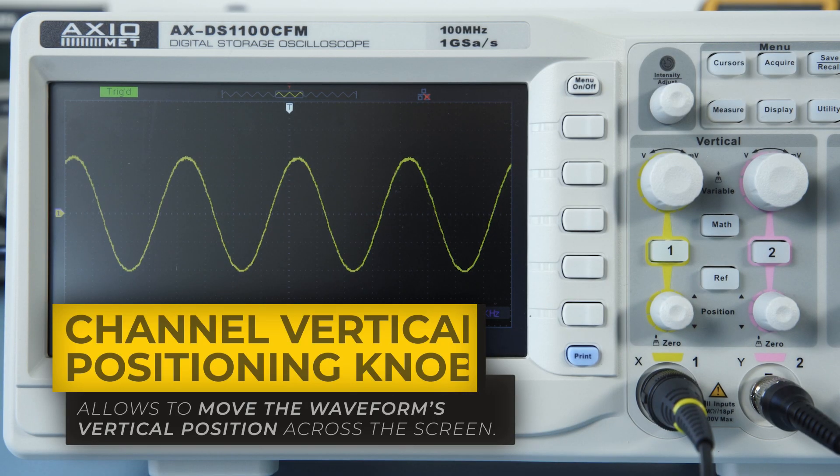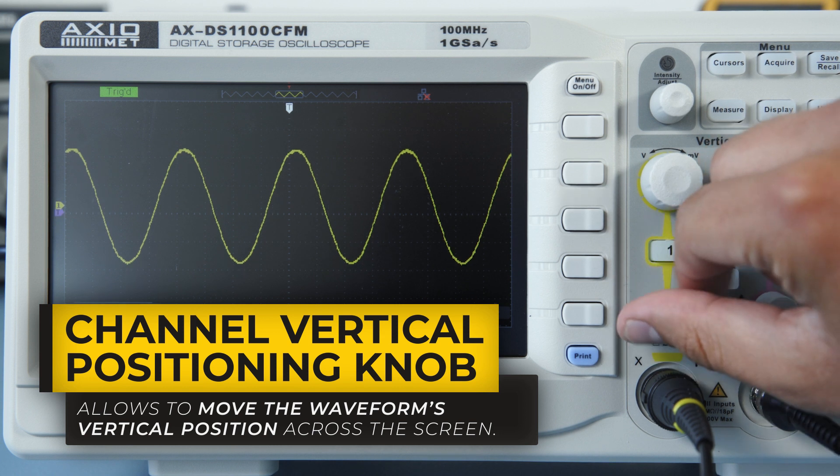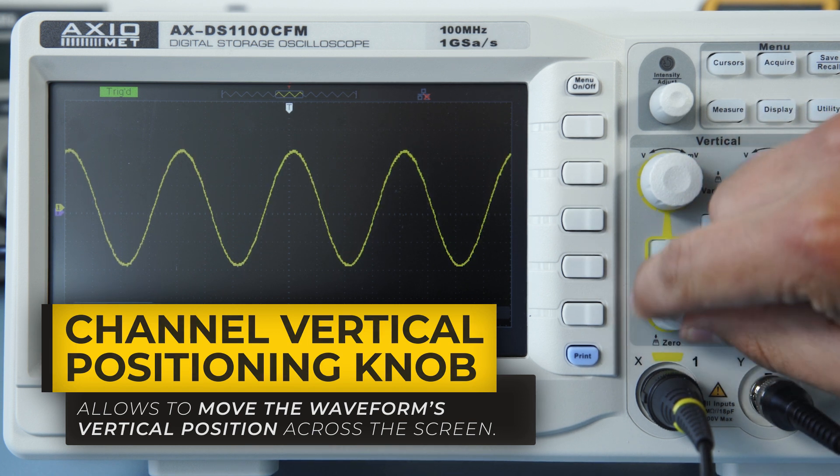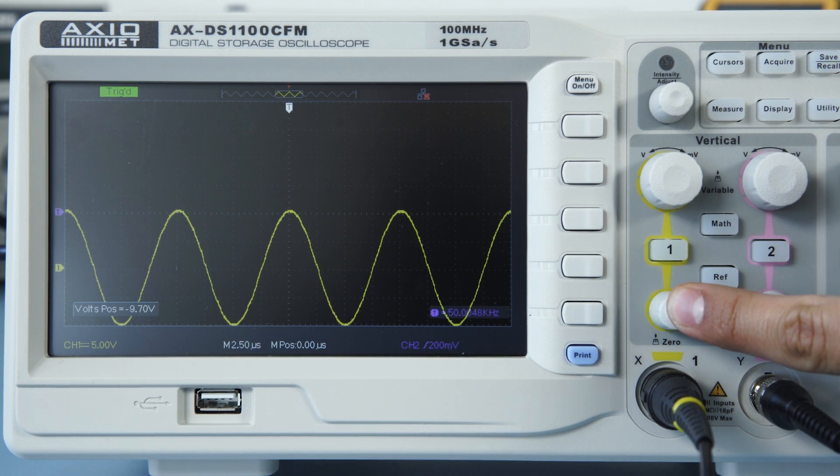To move waveforms vertical position across the screen, use the vertical positioning knob. To return the waveform to zero, simply press the knob.